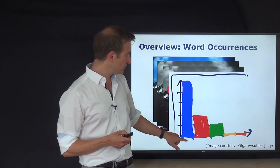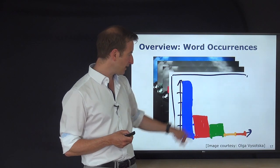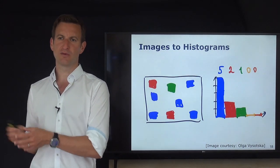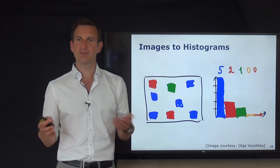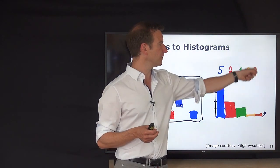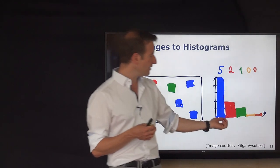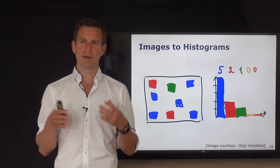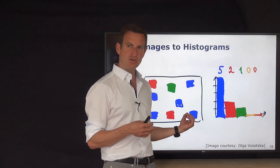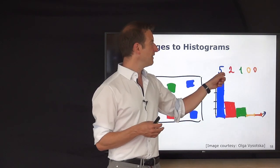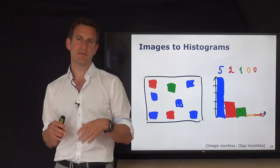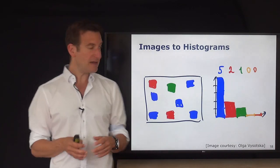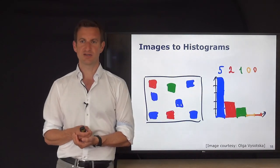Once I have the assignment, I can forget about the image. I don't need pixel values anymore — the image is now just a set of visual word occurrences. I simply count: blue appears five times, green once, red twice. This gives the histogram: blue count five, red count two, green count one, others zero. This histogram can be expressed as a vector: [5, 2, 1, 0, 0]. The order matters and must be the same for all images, defined through the visual word dictionary.